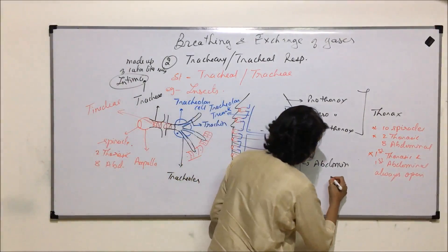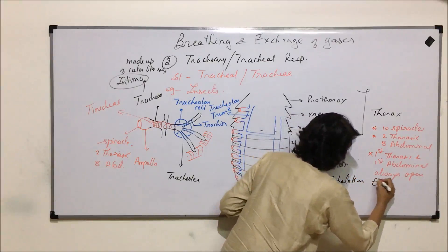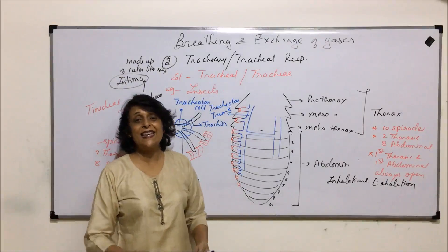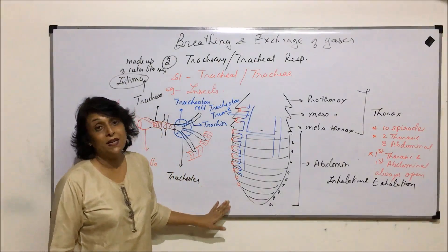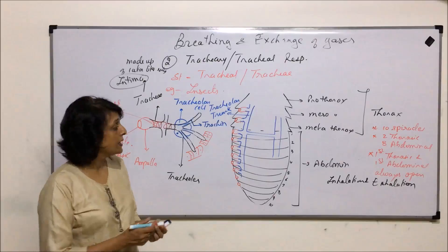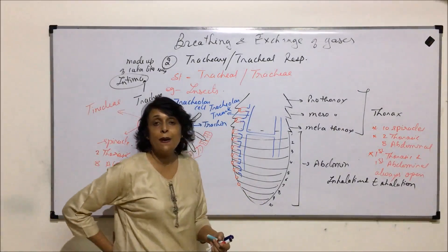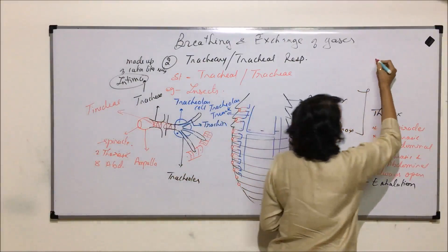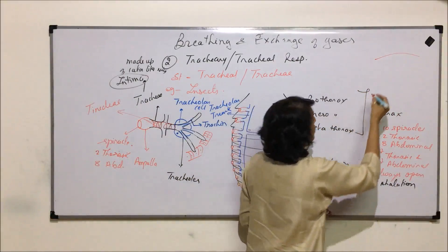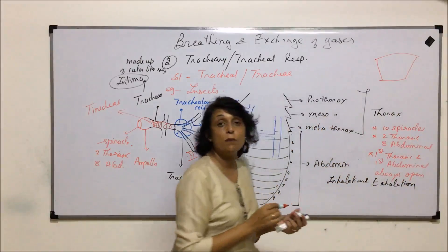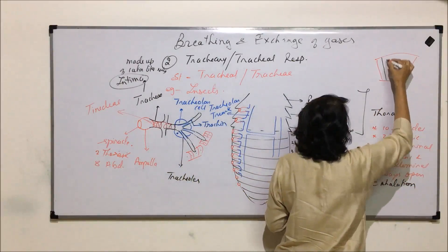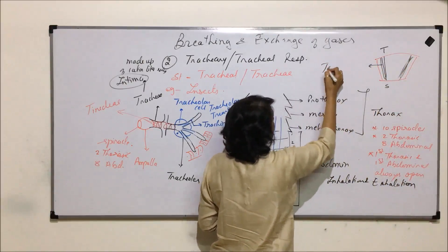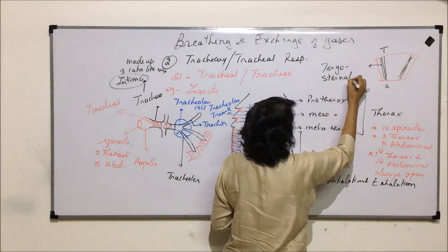Respiration is again completed in two steps: inhalation and exhalation. Inhalation is the taking in of air. The muscles which help in this process are known as tergosternal muscles. In insects, the body is made up of chitinous plates — the upper dorsal one is known as tergum, the lower one is called sternum, and there are pleura on the sides. The muscles helping in this process are attached from tergum to sternum — these are the tergosternal muscles.